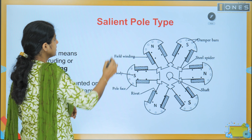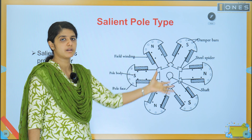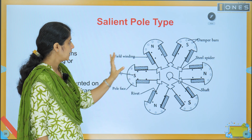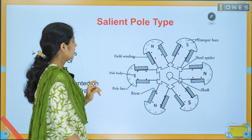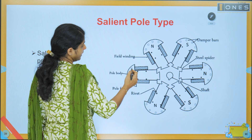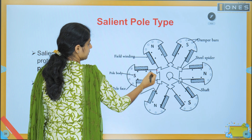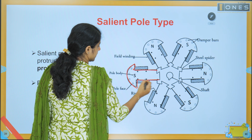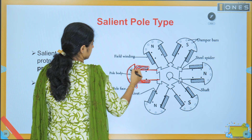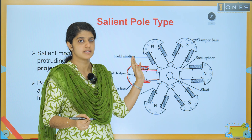The first type is the salient pole type rotor. It has a six-pole structure with projecting poles because of the shaft. The poles have field windings, and we provide DC excitation to excite these field windings.